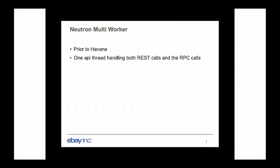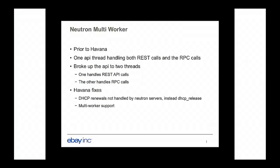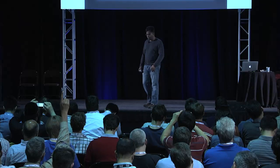Prior to Havana, there was one API server thread for Neutron handling both REST APIs and RPC calls. DHCP renewals were also being handled through RPC calls, putting a lot of load on the API server. We broke the server into two threads — one for RPC calls, one for API calls. In Havana those things are fixed: the chatter from VMs for IP address renewals has been eliminated, it's now handled by DHCP lease; and there's support for multi-workers, so you can spawn multiple threads to service your Neutron servers.